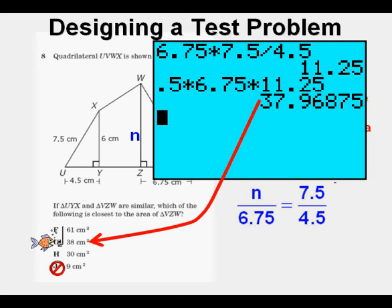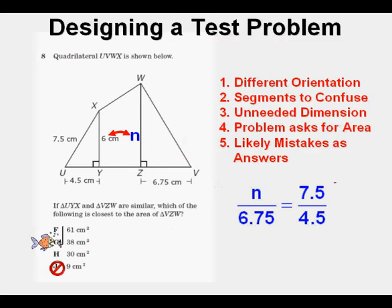After all, it says closest. For this answer, this is where the test writer tried to trick us. To get this answer, we had to put the 7.5 in the numerator which is at the left side of the smaller triangle. But the similar side is 6 since the two triangles are flipped in orientation. Therefore, G is also an incorrect answer based on a likely mistake.